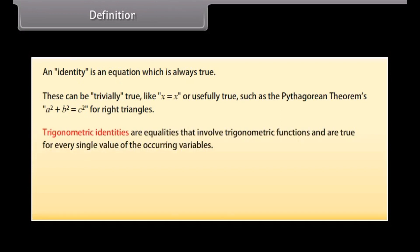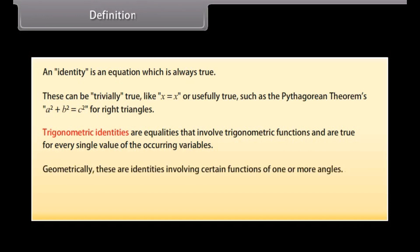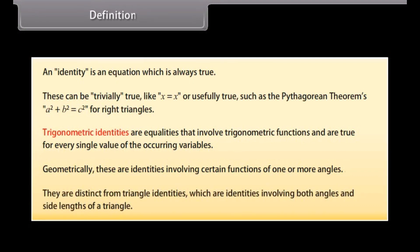Trigonometric identities are equalities that involve trigonometric functions and are true for every single value of the occurring variables. Geometrically, these are identities involving certain functions of one or more angles. They are distinct from triangle identities, which are identities involving both angles and side lengths of a triangle.